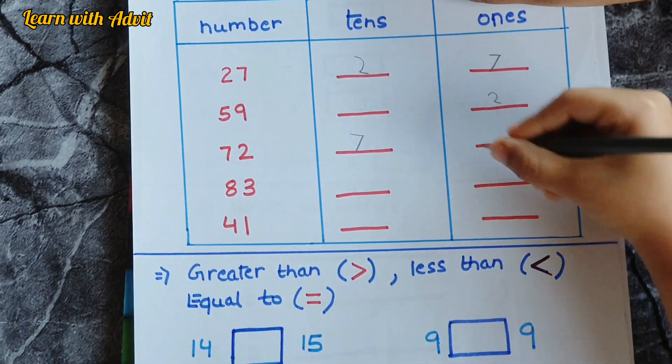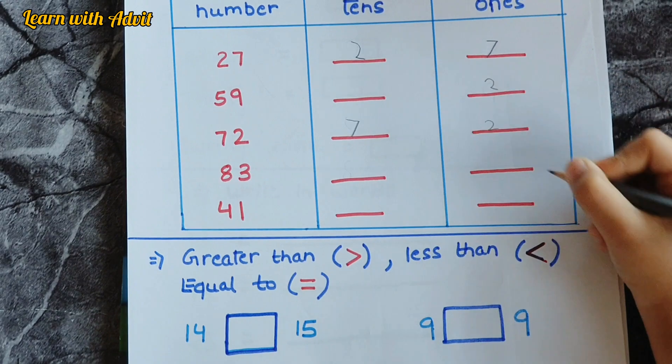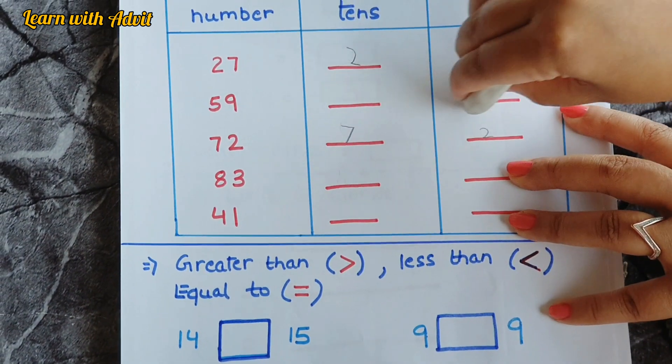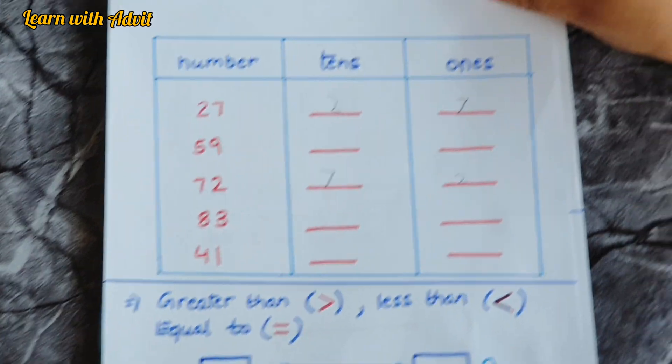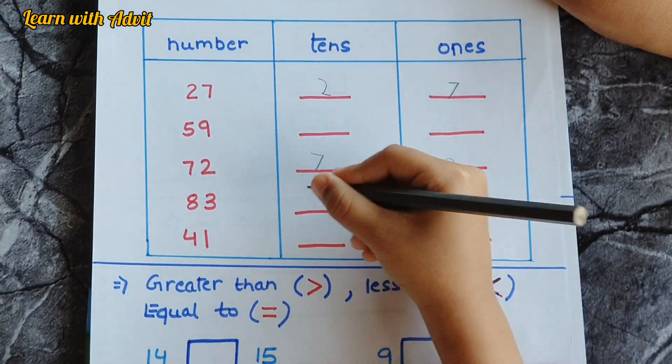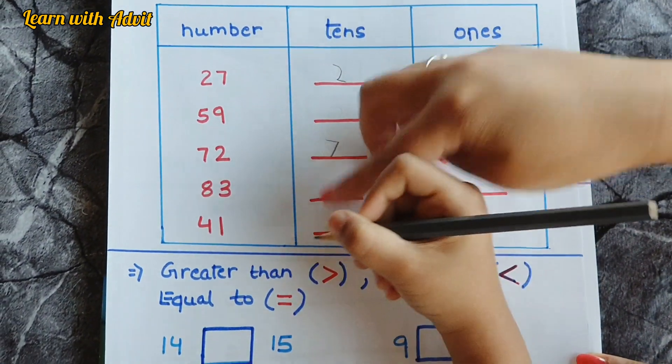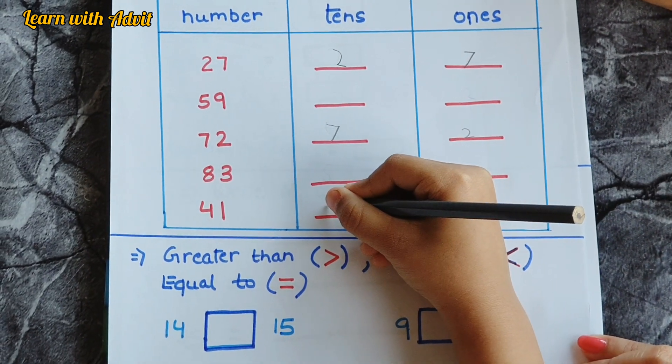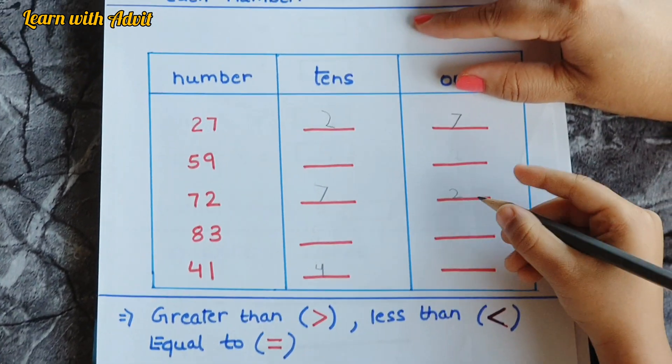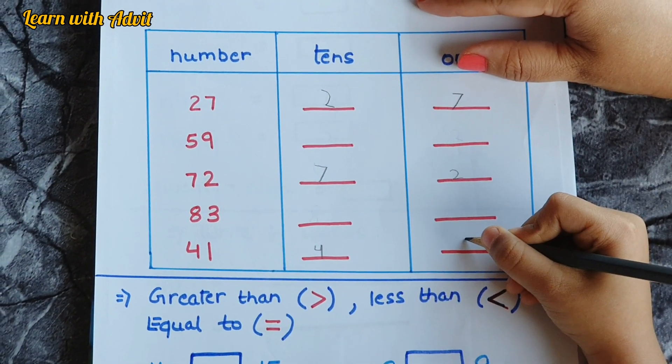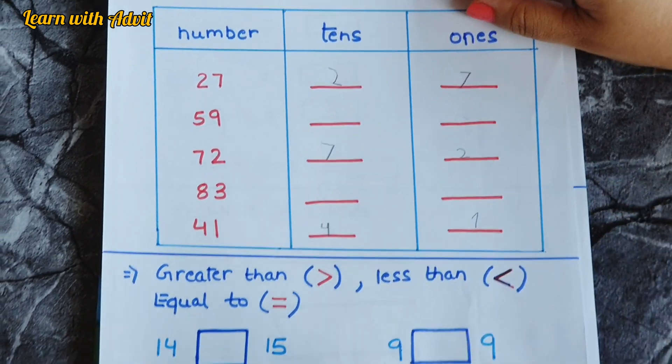Write. For forty-one, write. So four has to be in tens, the last one. And the one has to be in ones place.